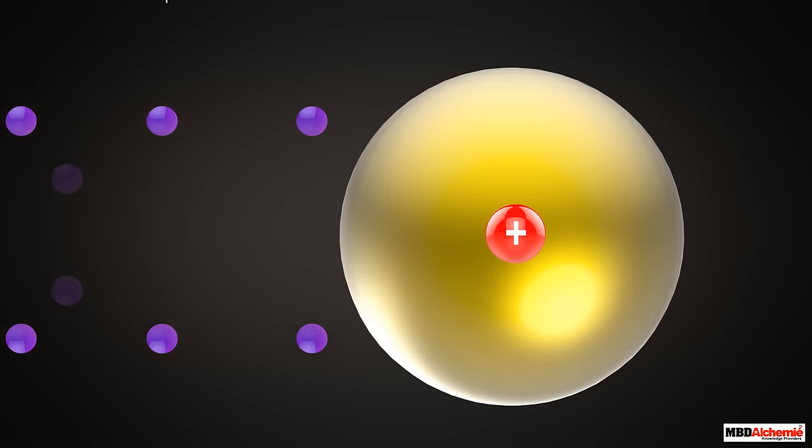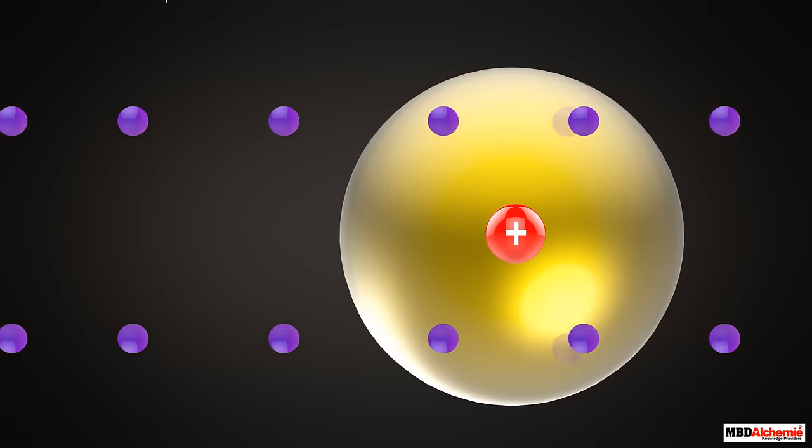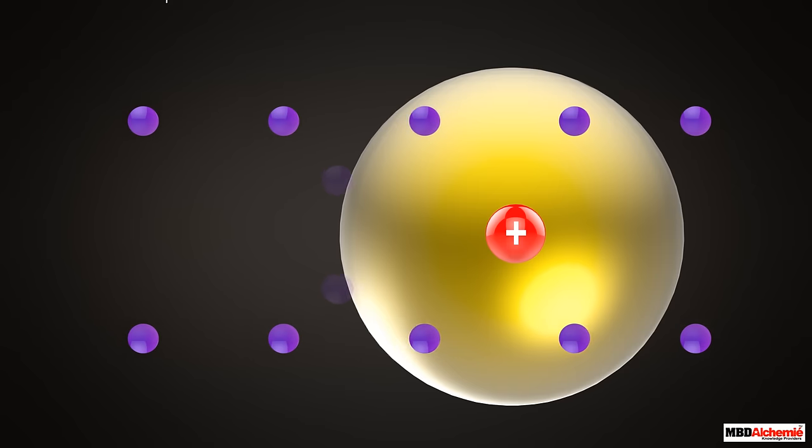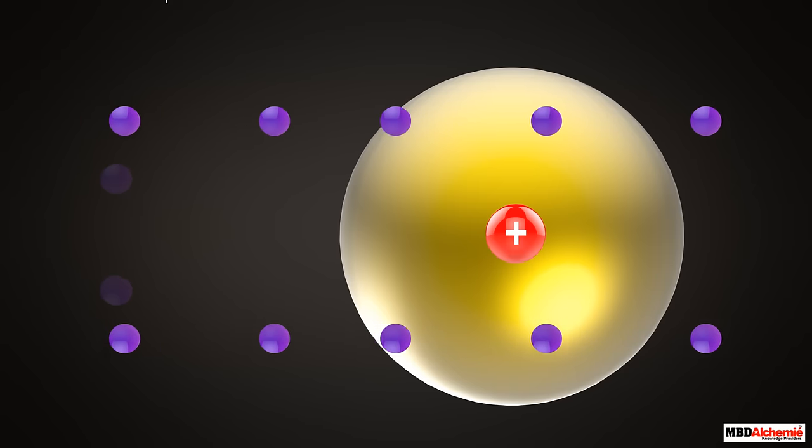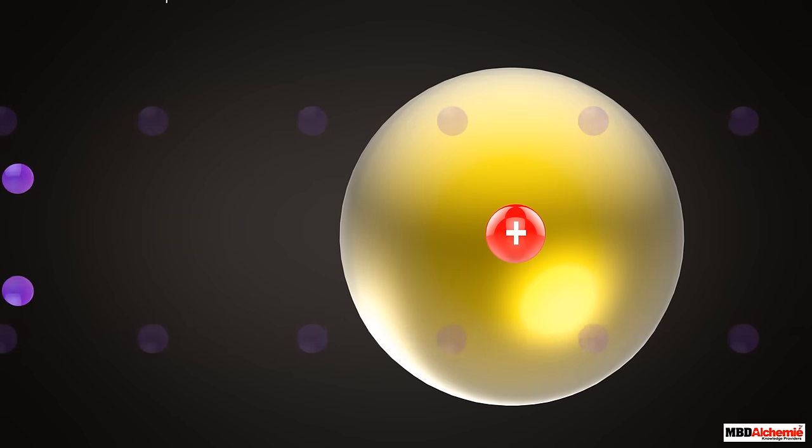As most of the particles passed undeflected, Rutherford concluded that most of the space inside a gold atom was empty. A few particles were deflected from their path by small angles, indicating that there must be a positively charged center which was repelling alpha particles. As these particles were few in number, this led to the conclusion that a positively charged center occupies a tiny space.